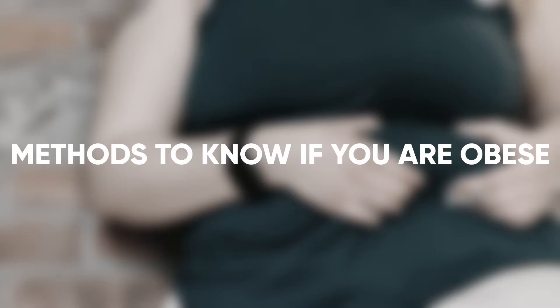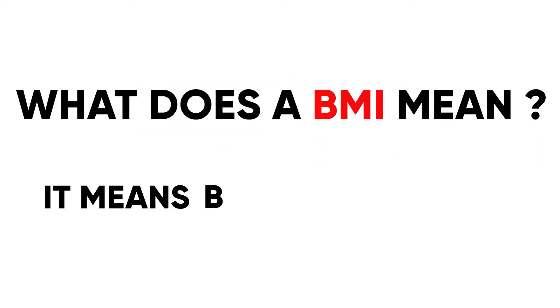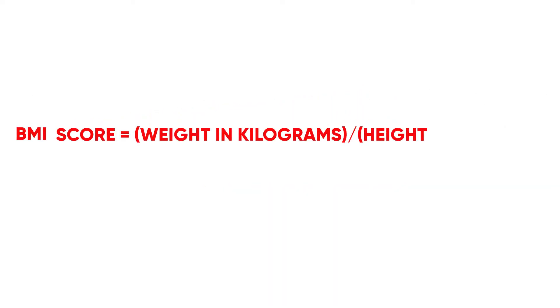The first method is a BMI scale. What does BMI mean? It means Body Mass Index, where B stands for Body, M for Mass, and I for Index. You can calculate your BMI score using this formula.